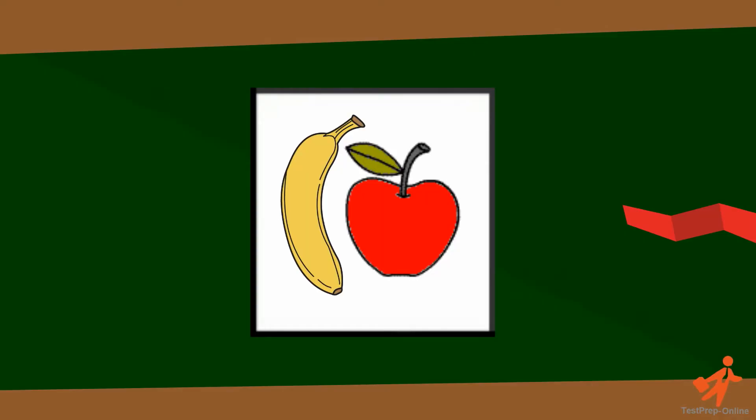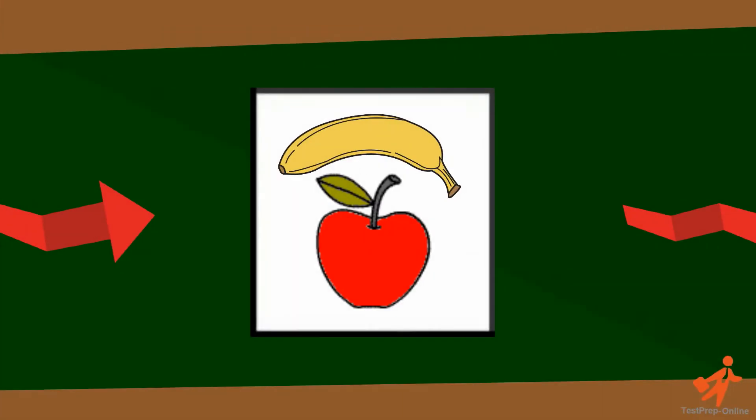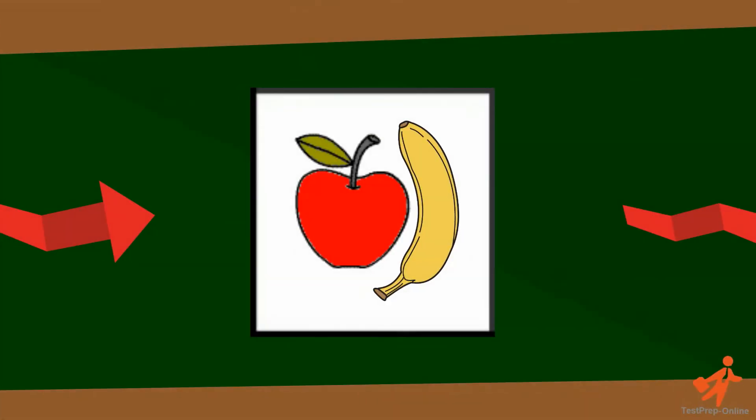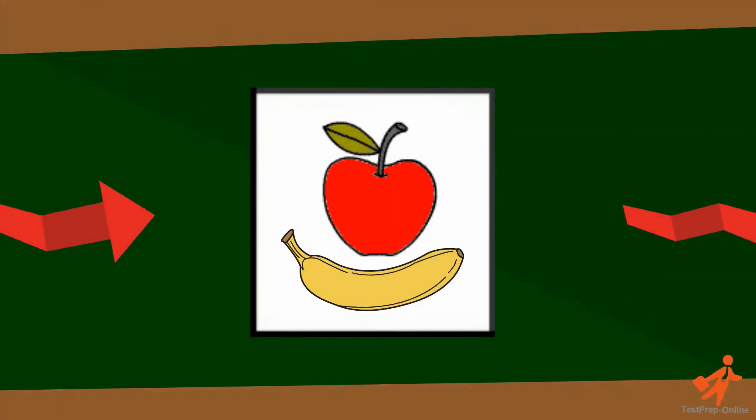First we have an apple with a banana to its left. In the second picture we have an apple with a banana above it. In the third picture we have an apple with a banana to its right. In the fourth frame we have an apple with a banana below it.